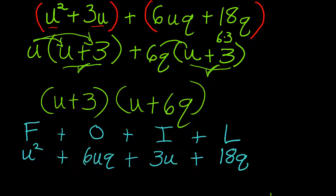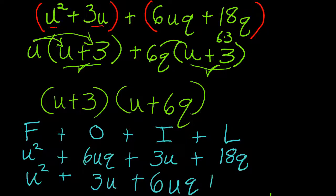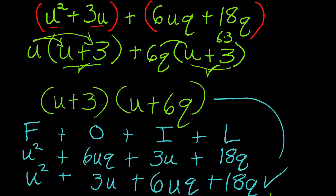We can rearrange any terms that are added. So we'll have u squared plus 3u plus 6uq plus 18q, which is exactly what we started with. So that means this is the correct factorization. Talk to you later.